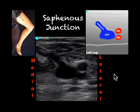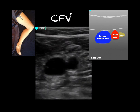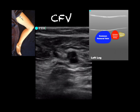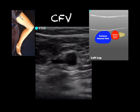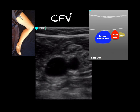From the saphenous junction, move the probe superior to find the common femoral vein. When we look at the common femoral vein, we can see the artery there again, and here's the vein. Remember that on the left leg, this is lateral and this is medial. When we compress here, we just make sure those two walls touch — which they do. You can see a valve flickering in the vein at the junction — that's normal, don't worry about it.